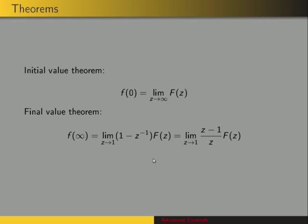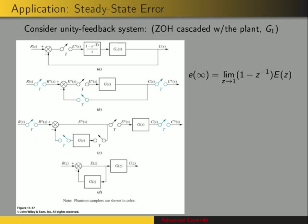We'll look at an application for this and examine steady state error. Here is a unity feedback system with sample data. We've got the plant G1 and sample data. What we want to do is rearrange this block diagram in order to get a transfer function for the error. We use the rules for sample data and rearranging block diagrams to come up with that transfer function.